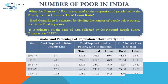From 1973-74 to 2004-05, the level of population below the poverty line is decreasing significantly both in urban and rural areas, as shown in the table for number and proportion of people below the poverty line.